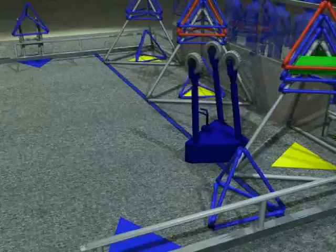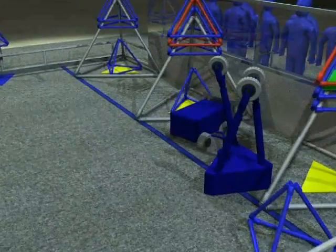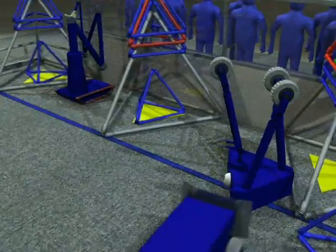As the end of the match approaches, robots will head for their end zone. Teams will get bonus points for getting all three of their robots behind the end zone line.